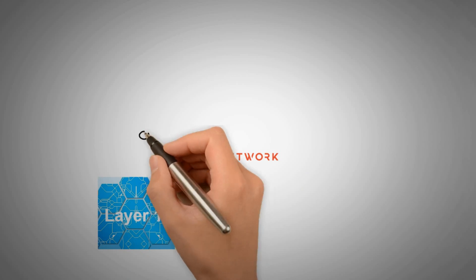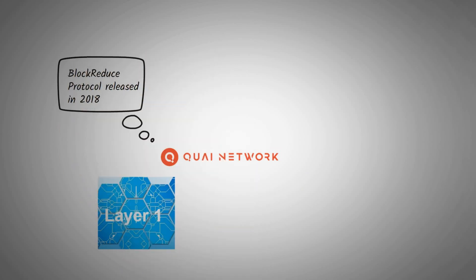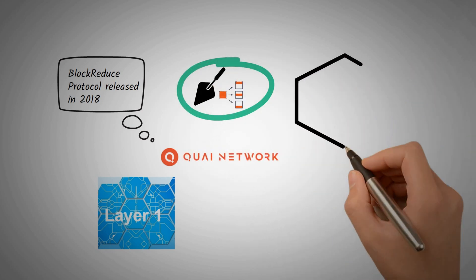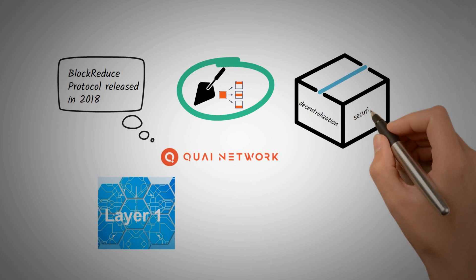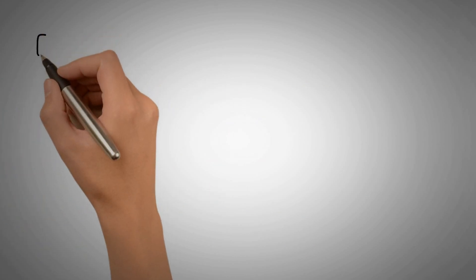Quai Network is a layer-one network of blockchains based off of the BlockReduce protocol released in 2018. Utilizing a novel combination of merged mining and sharding, Quai Network maintains high decentralization and security while achieving radical improvements in TPS and throughput over traditional blockchains.